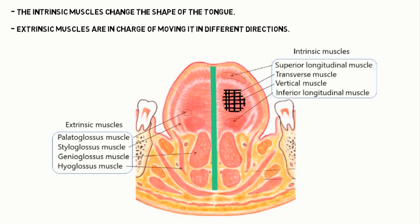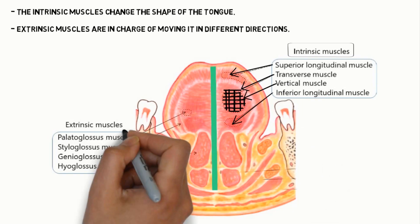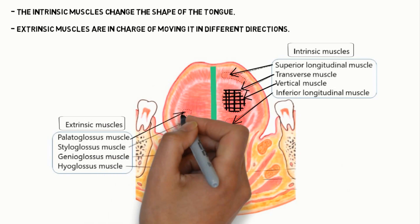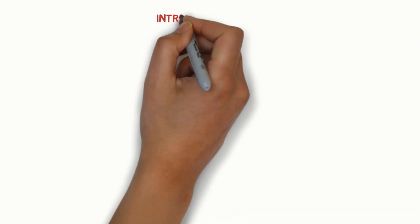The intrinsic muscles are: first, superior longitudinal muscle; second, transverse; third, vertical muscle; fourth, inferior longitudinal muscle. The extrinsic muscles are: first, palatoglossus muscle; second, styloglossus muscle; third, genioglossus muscle; and finally, hyoglossus muscle.